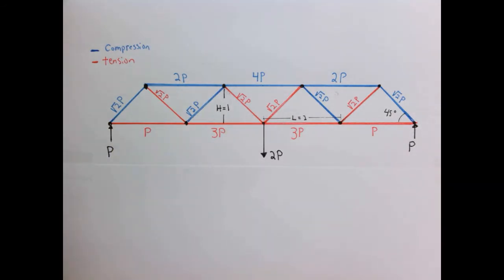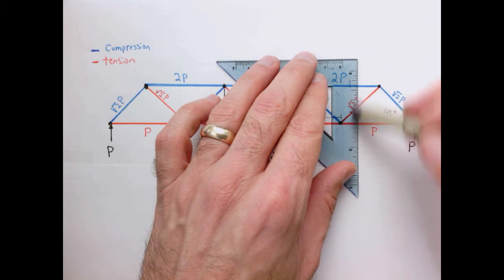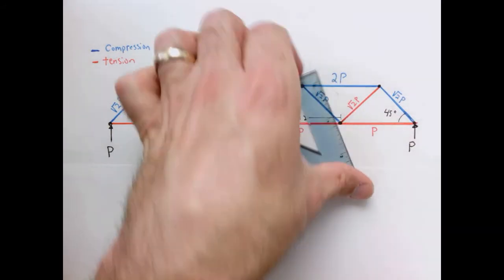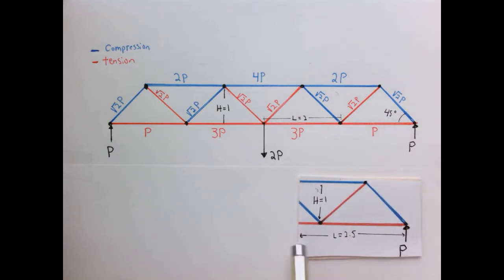Just like in the previous video, what I want to do is imagine that I slice this thing at different sections. Let's take a slice right here. I've taken a slice where the length is 2.5 units. The height is 1 because this is a 45 degree angle. Now I want to imagine what's the free body diagram of the forces in these members to hold this cross-section, this cut that we made in equilibrium.